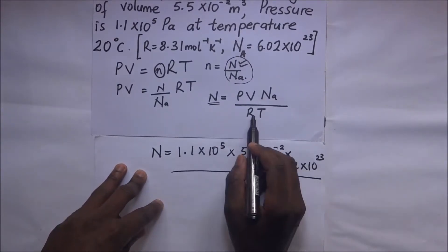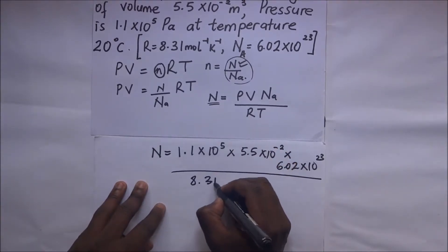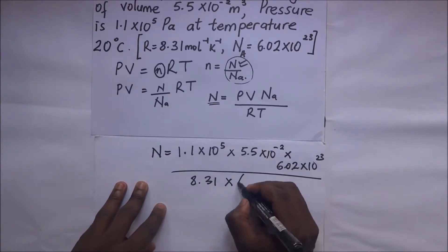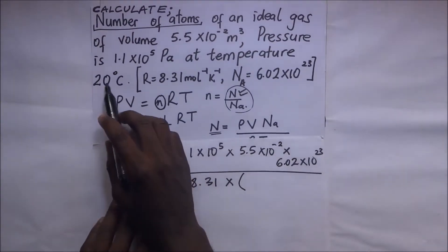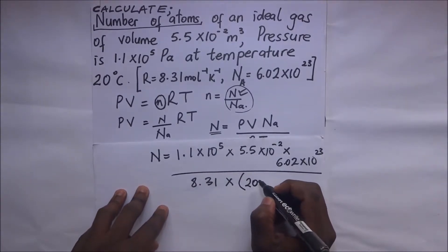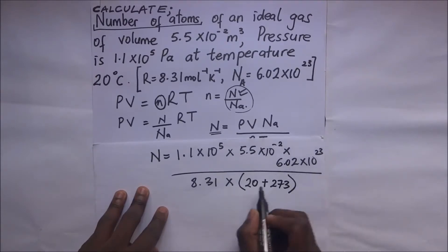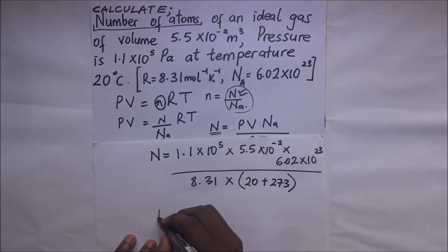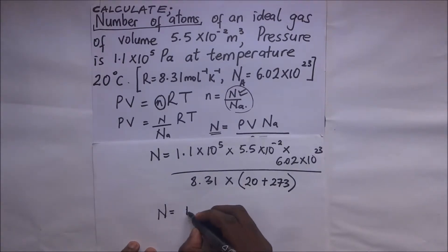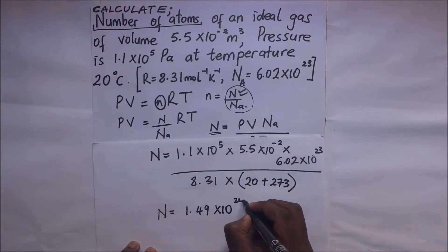The temperature is given as 30°C, which we convert to Kelvin by adding 273, giving T = 303 K. Carrying out the calculation, we get the number of particles N ≈ 1.49 × 10²⁴ atoms.